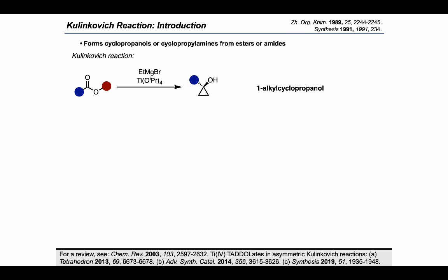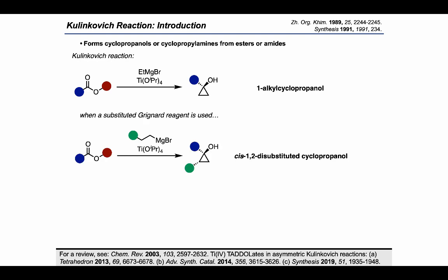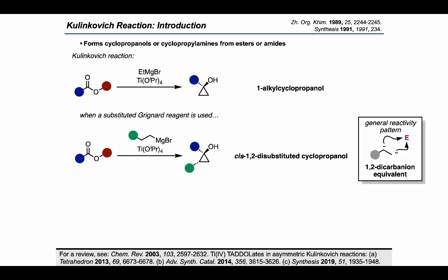Generally speaking, the Kulinkovitch reaction entails the formation of a cyclopropanol or a cyclopropylamine from an ester or an amide. For example, treatment of a generic ester with ethylmagnesium bromide and titanium tetraisopropoxide results in the formation of a cyclopropanol product. If we use a substituted Grignard reagent rather than ethylmagnesium bromide, we can generate cis-disubstituted cyclopropanol products. From these cases, we can start to formulate a general reactivity pattern, where we understand that the incoming Grignard reagent is being used to generate a 1,2-dicarbanion equivalent in situ.